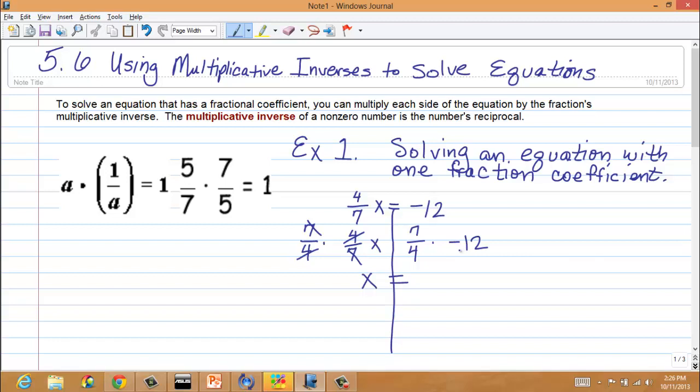So, let me just say that negative 12 is the same as saying negative 12 over 1. And so, then when we actually do the multiplication, we would have 7 times negative 12, which is negative 84. So, let me, where's my pen? Okay. So, negative 84 over 4. And this will reduce to become negative 21. So, the solution is negative 21.